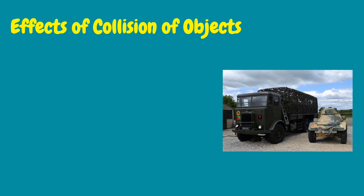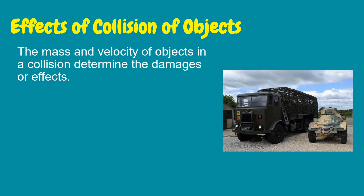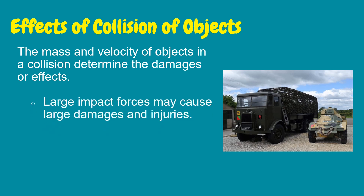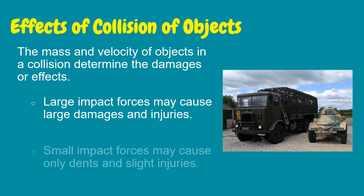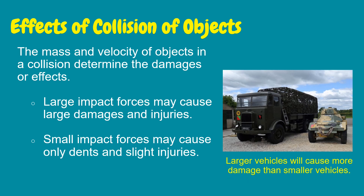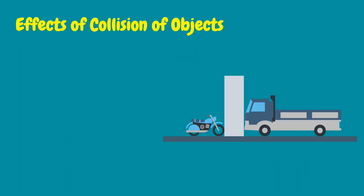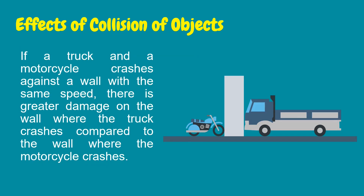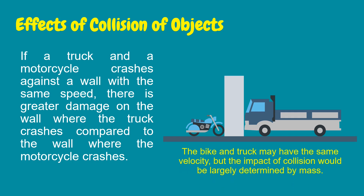What are the possible effects of collision of objects? The mass and velocity of objects in a collision determine the damages or effects. Large impact forces may cause large damages and injuries, while small impact forces may cause only minor and slight injuries. For example, if a truck and a motorcycle crash against a wall with the same speed, there is greater damage where the truck crashes because even though the bike and truck may have the same velocity, the impact of collision is largely determined by mass.